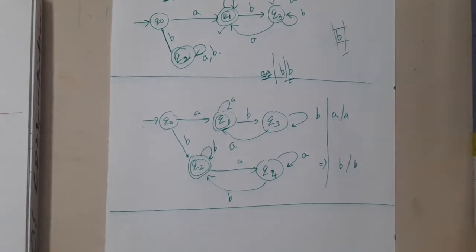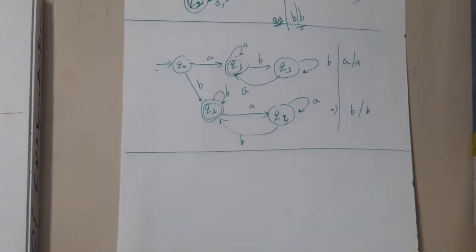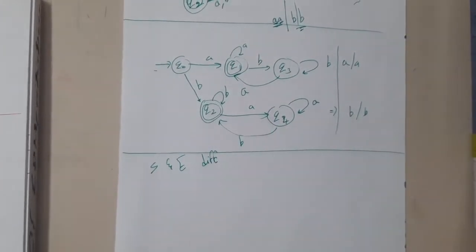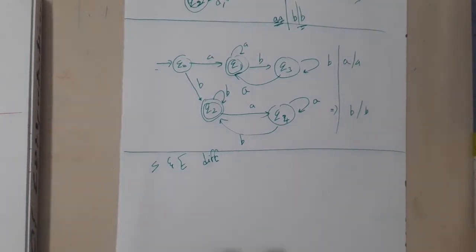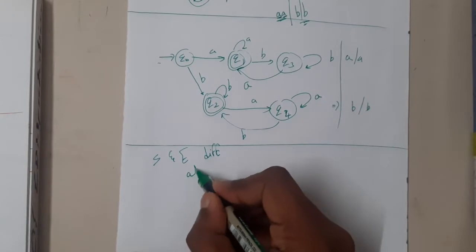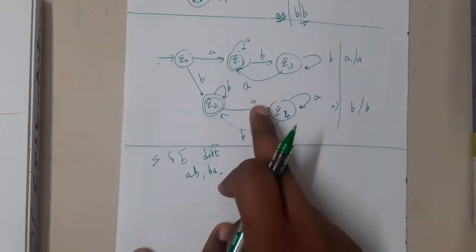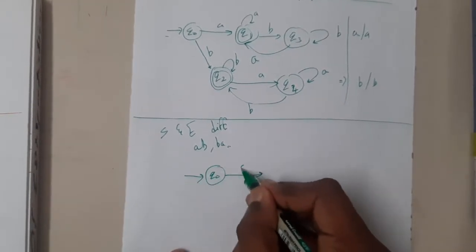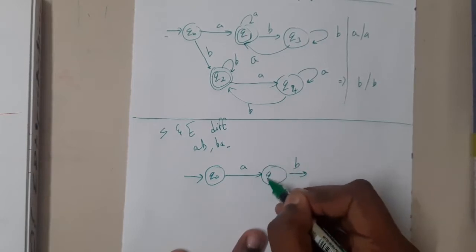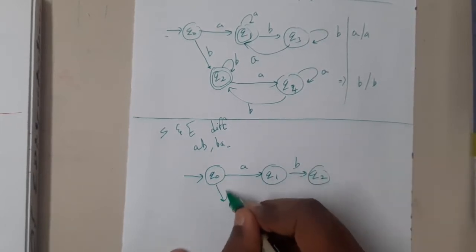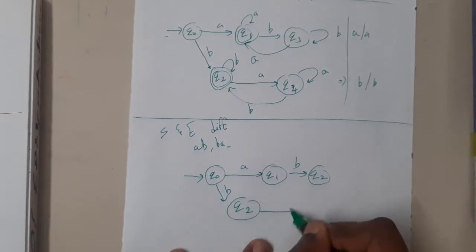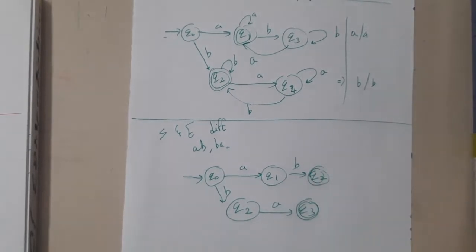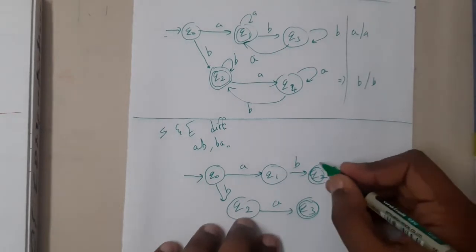Now assume the same question is given but starting and ending with different symbols. The minimum length will be two — 'ab' is a valid string and 'ba' is a valid string. We design two paths: from q0, if we get 'a' we go one way, if we get 'b' we go the other way to q2 and q3, which are the final states.